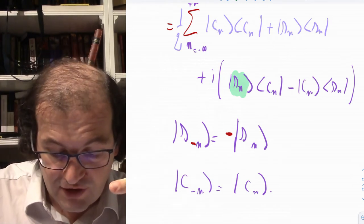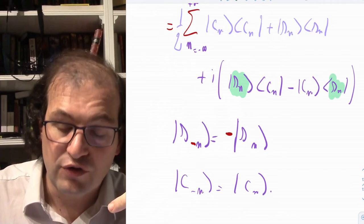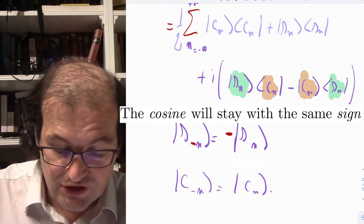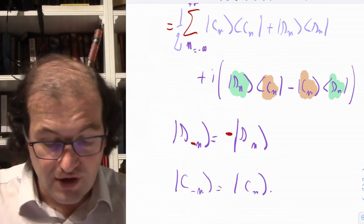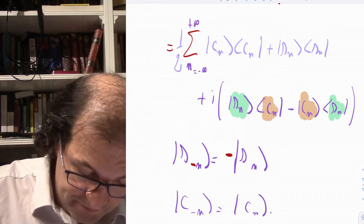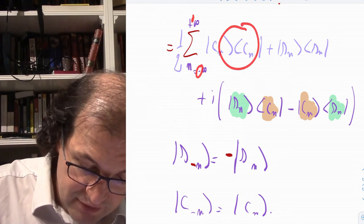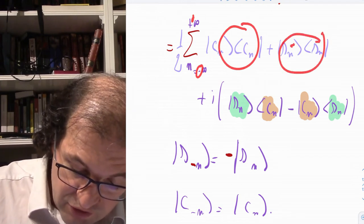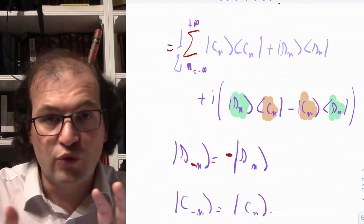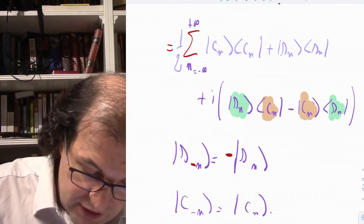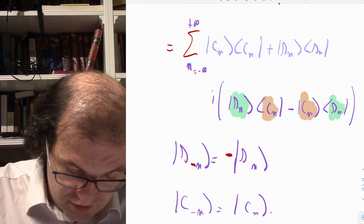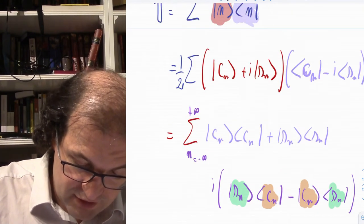Working out the product: we get one half times (c_n bra-ket c_n plus s_n bra-ket s_n), which are each the identity, plus cross terms i times (s_n c_n minus c_n s_n). These cross terms cancel when we extend the sum from minus infinity to infinity, because the sine is an odd function: s of minus n equals minus s of n. The cosine is even: c of minus n equals c of n. When we take the sum from minus infinity to plus infinity, the cross terms at plus n and minus n cancel each other, while the diagonal terms reinforce.